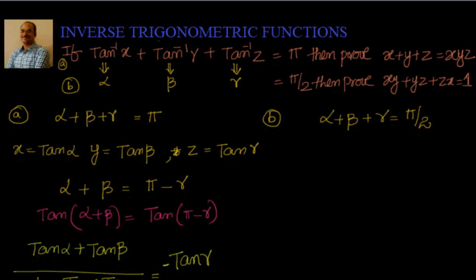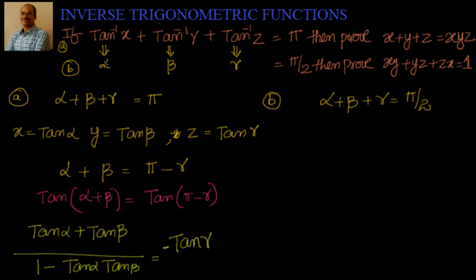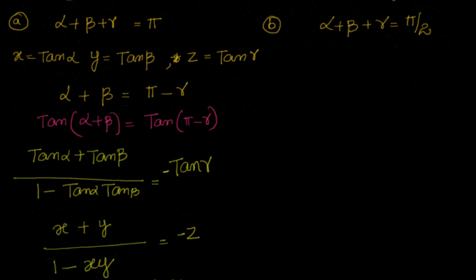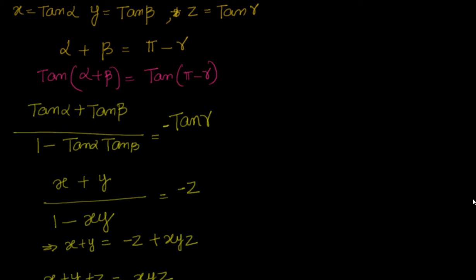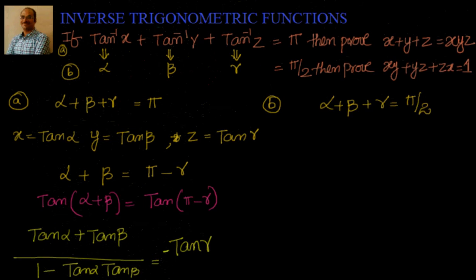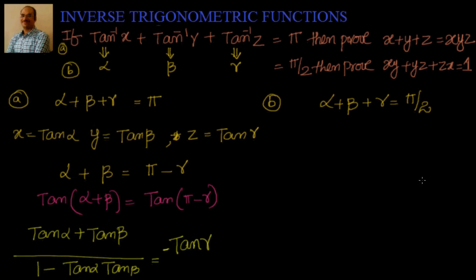What we did? We just took the inverse function as angle, then we applied tan on both sides with alpha plus beta plus gamma equal to pi, and substituting back we got x plus y plus z equal to xyz.